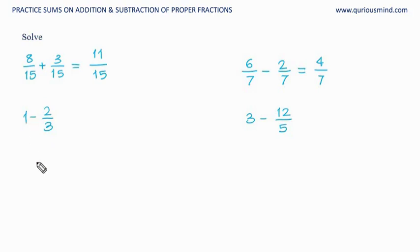1 is a whole and that can be represented as 1 upon 1, so 1 upon 1 minus 2 upon 3. Denominators are not same, so we need to make them same. Find LCM. LCM of 1 and 3 is 3. Hence, 1 upon 1 will have to make denominator 3, so numerator also becomes 3. It becomes 3 upon 3 minus 2 upon 3.